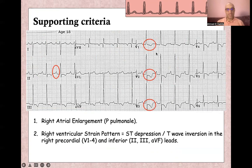Right ventricular strain pattern, which is ST depression and T wave inversion in the right chest leads V1 through V4, and also in inferior leads: lead two, lead three, and lead aVF.